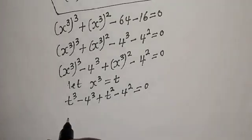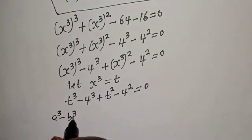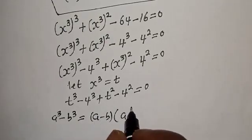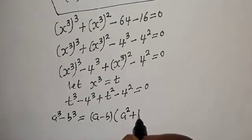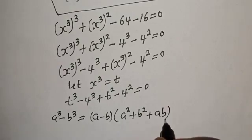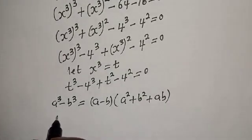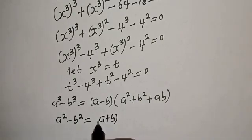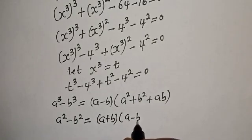Now we apply algebraic identities. If you have a raised to the power 3 minus b raised to the power 3, this equals a minus b multiplied by a squared plus b squared plus ab. Also, if you have a squared minus b squared, this equals a plus b multiplied by a minus b.